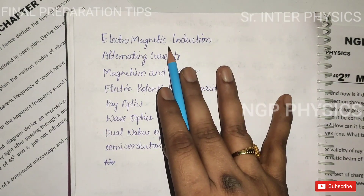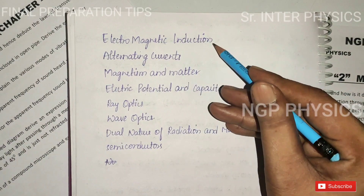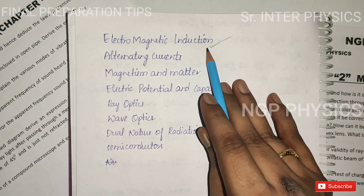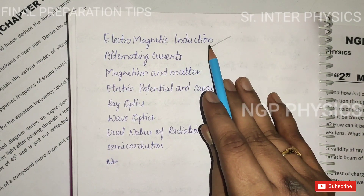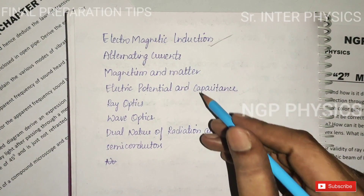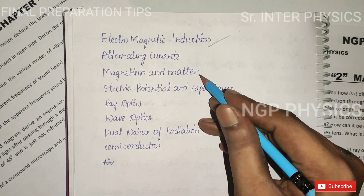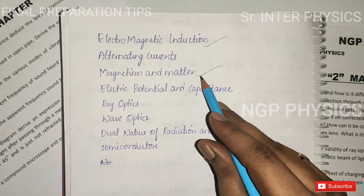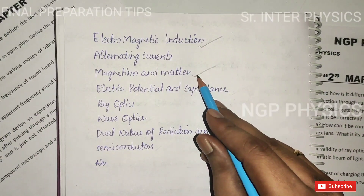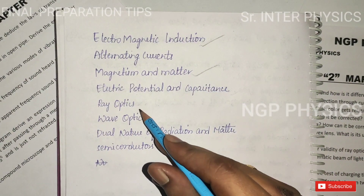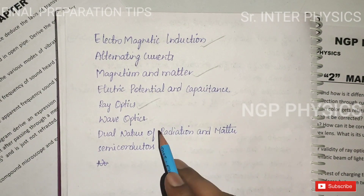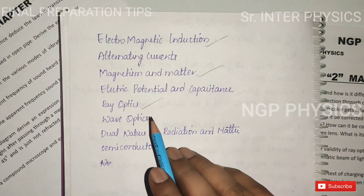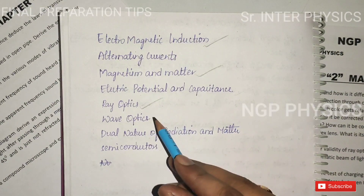First, Electromagnetic Induction — EMI. This chapter covers the 4th question. The next one is Magnetism and Matter, then the Axial Equation condition. After that, Ray Optics: sun apparatus, critical angle, formation of mirage, and formation of rainbow.